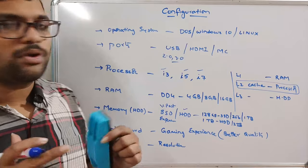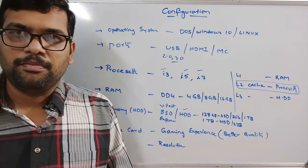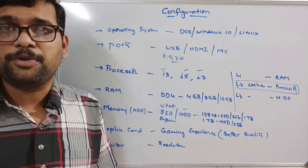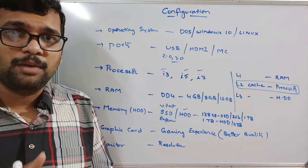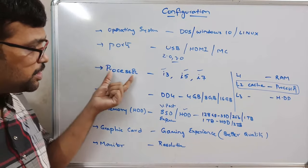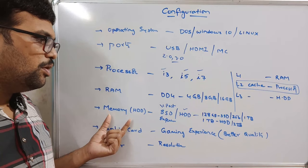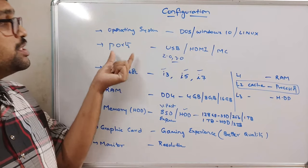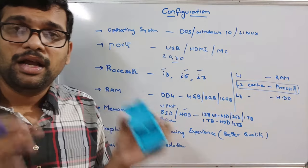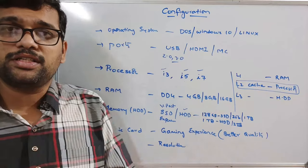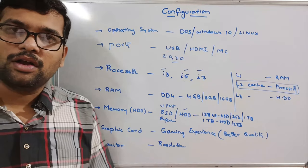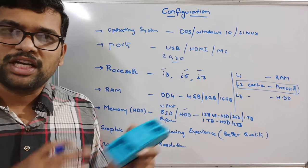Now I will show you the configuration of all these things — where to find them after buying a laptop or desktop. If you have a personal computer or laptop, how can you find its configuration? That means what processor it is using, what is the RAM, hard disk, graphics card, monitor resolution, ports, operating system, and whether the architecture is 32-bit or 64-bit. Let's move on to the computer.